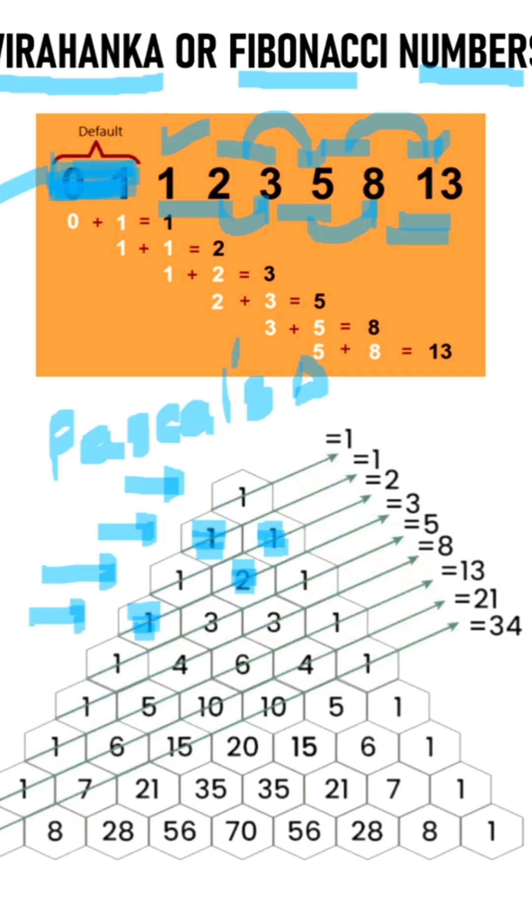Likewise, in the next row, starting with 1, ending with 1, and in the middle 1 plus 2 gives 3, 2 plus 1 gives 3. We can continue this pattern to obtain new rows of Pascal's triangle.